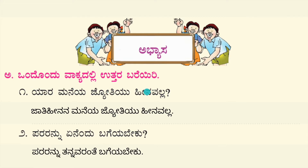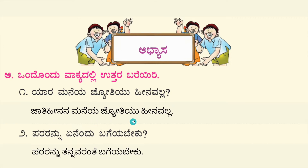One: answer the following questions in one sentence each. Yara maneya jothiyu heena valla? The lamp in whose house is not bad? Answer: Jati heenana maneya jothiyu heena valla.